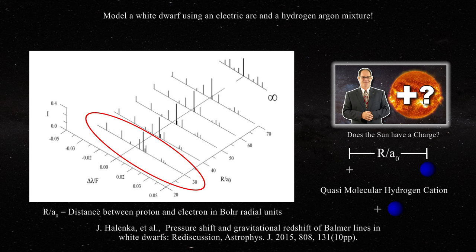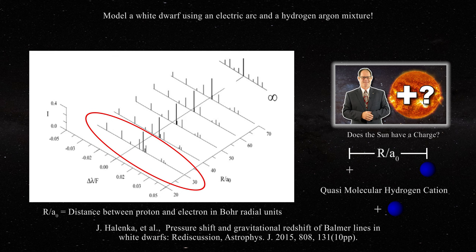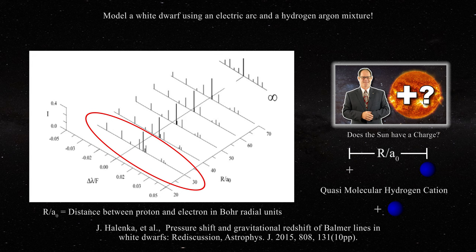Strangely, the authors claim that the hydrogen alpha line in white dwarfs will not experience Stark-dependent redshifts, despite disproving that claim with their very own figure. In reality, Stark effects can easily account for 100% of the redshifts observed on Sirius B.